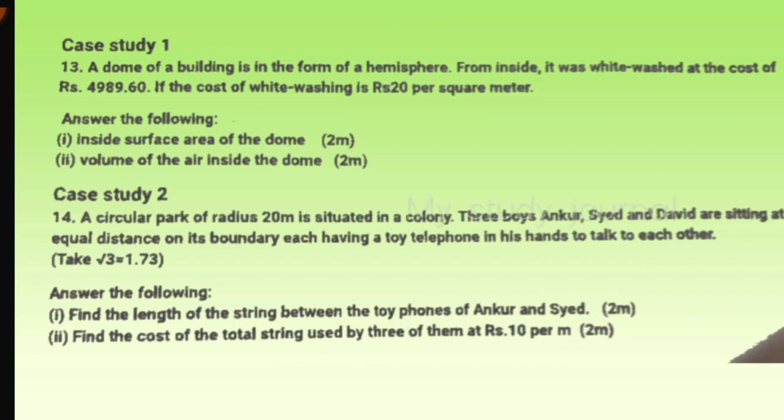Going to the case study questions, we have two case study questions. Each case study question is of four marks - each case study has two questions, each question is two marks. Thirteenth question: a dome of a building is in the form of a hemisphere. From inside, it was whitewashed at the given cost. If the cost of whitewashing is rupees 20 per square meter, answer the following.